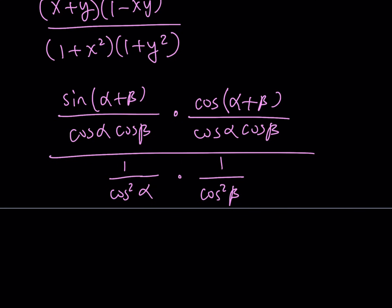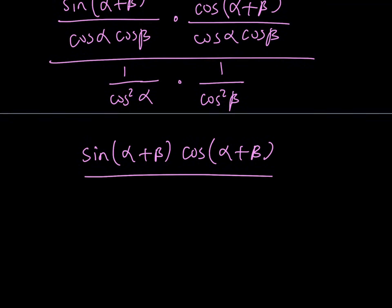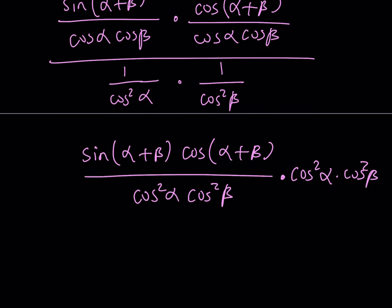This looks a bit complicated, but let's simplify. The numerator is a product: sine(α+β) times cosine(α+β), divided by cosine alpha cosine beta times cosine alpha cosine beta — that is, cosine squared alpha times cosine squared beta. The denominator is 1 over cosine squared alpha times 1 over cosine squared beta. Dividing by the denominator means flipping and multiplying by cosine squared alpha times cosine squared beta. The cosine squared alpha and cosine squared beta cancel out, leaving just sine(α+β) times cosine(α+β).